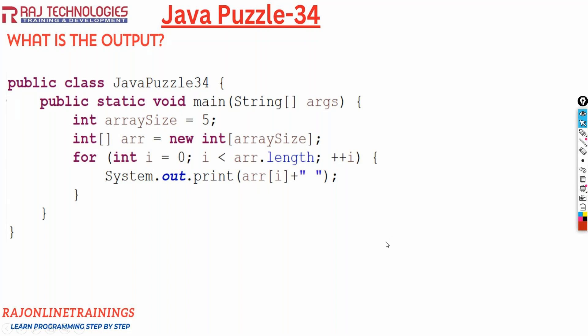Now let us see the options for this. Option A is no output, means nothing will get displayed on the screen. Option B, compile time error. Option C, it goes with exception. So since it is arrays, it will go with the array index out of bounds exception. And option D is 5 zeros. It is going to print zeros. Now let us understand what will be the output of this program.